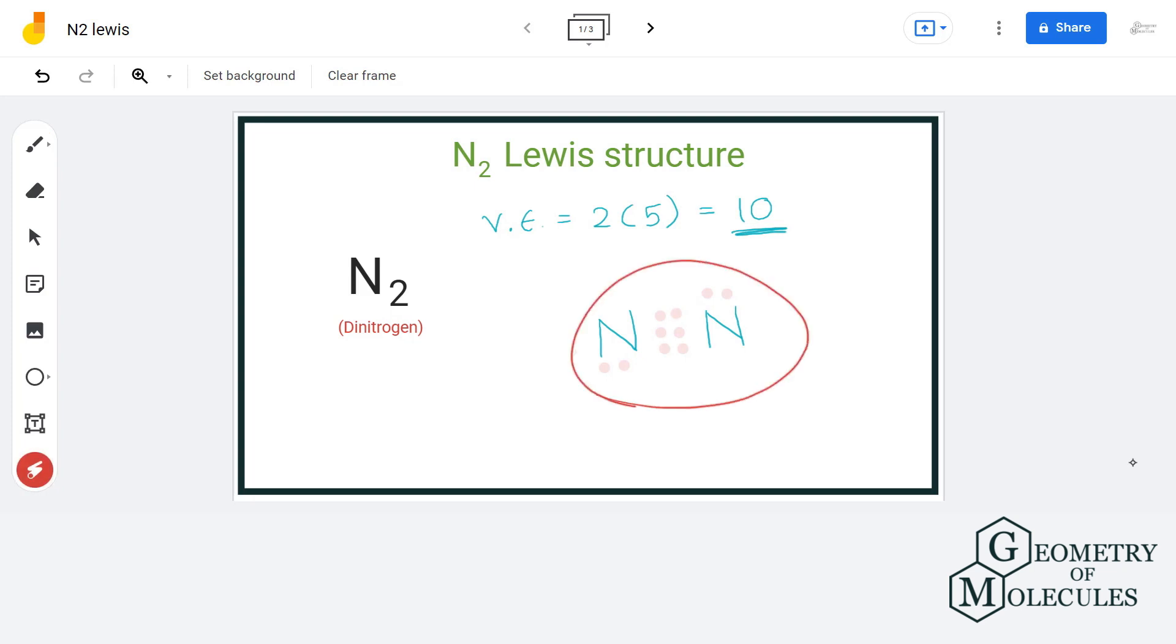Thus every atom in this Lewis structure has complete outer shell and zero formal charge. So this is the final Lewis structure of N2 molecule.